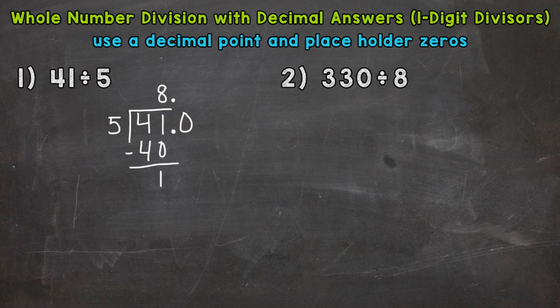Placing a zero to the right of a decimal point does not change the value of the problem. So that zero, we still have 41 there. So it's okay to use that placeholder zero.